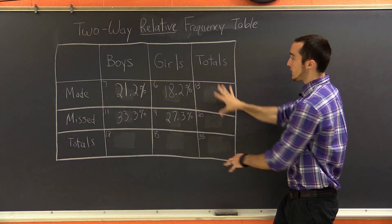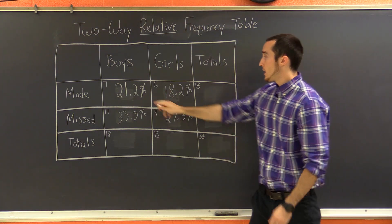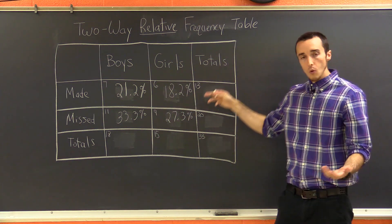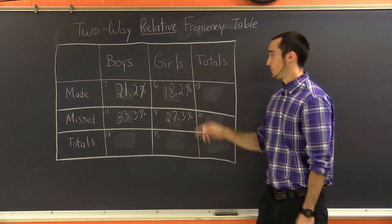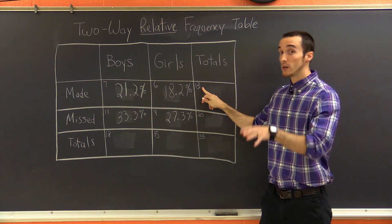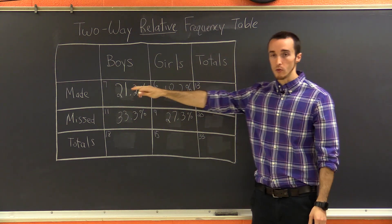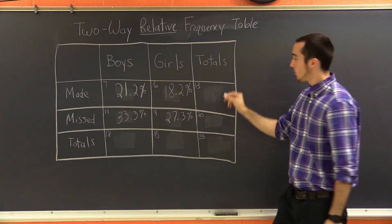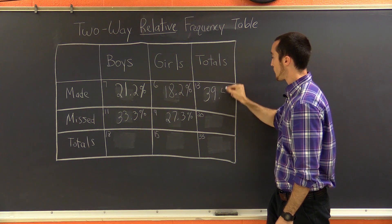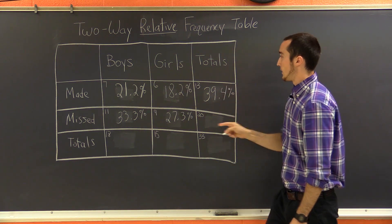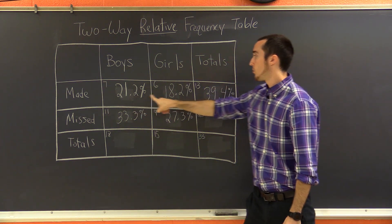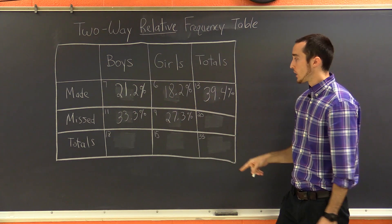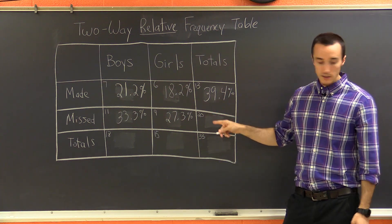Now, how do you get these totals? Well, one of two ways. Either you can just add these percentages, and it will total this one, or you can use the raw information. So for instance, I knew from my previous table that there were 13 people in general who made a basket. So 13 out of 33 is 39.4%. And so you can double check yourself. 21.2 plus 18.2 equals 39.4%. So let's do the same thing with the rest of these totals.